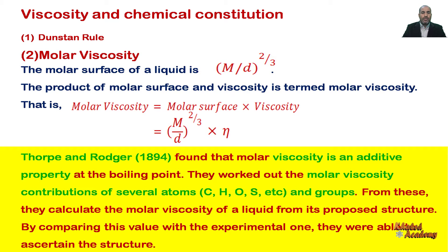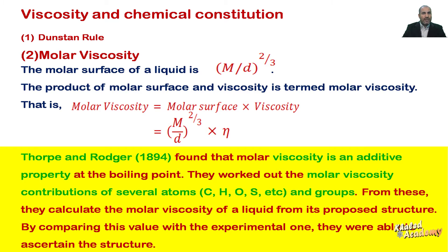Thorpe and Roger in 1894 found that molar viscosity is an additive property at the boiling point. They worked out the molar viscosity contributions of several atoms like carbon, hydrogen, oxygen, and sulfur, etc., and groups. From these, they calculated the molar viscosity of a liquid from its proposed structure.